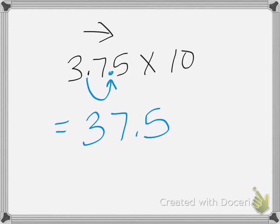The trick to know how many times you move it is you look at how many zeros you have. So in this case, I have 10. So I have one zero, so I move my decimal place one place to the right.